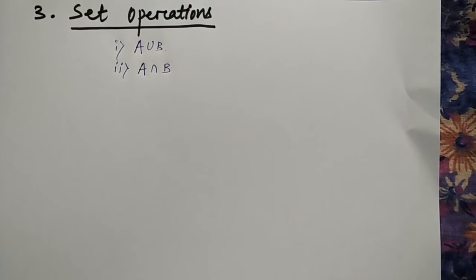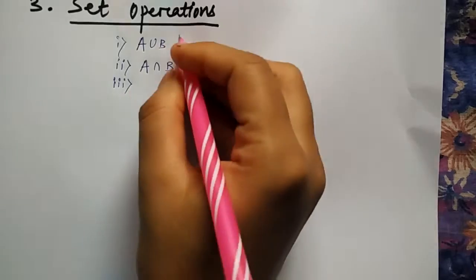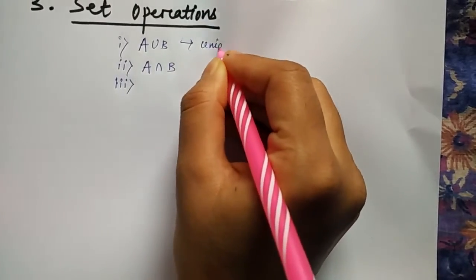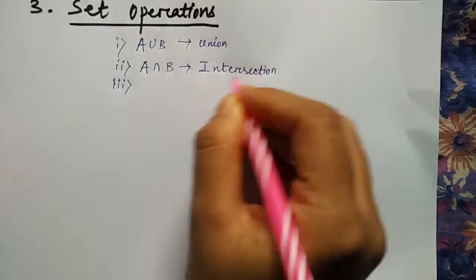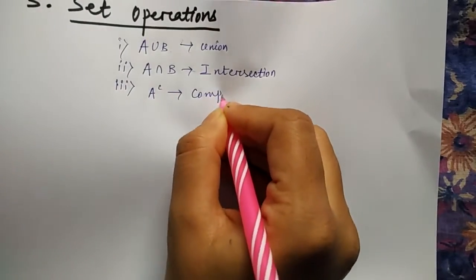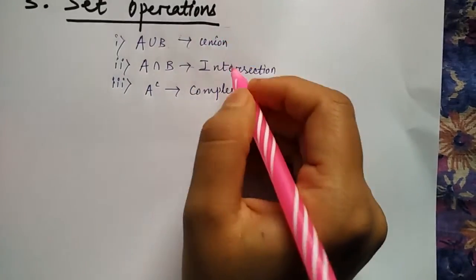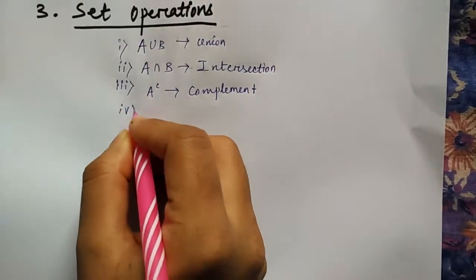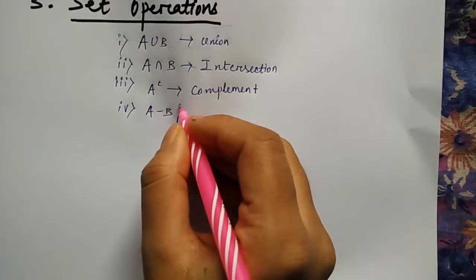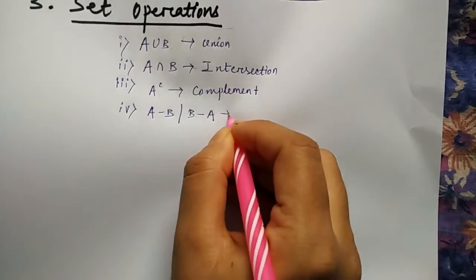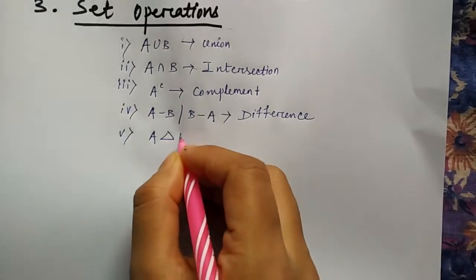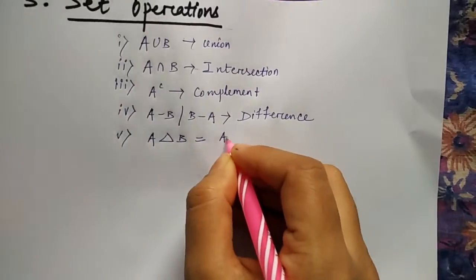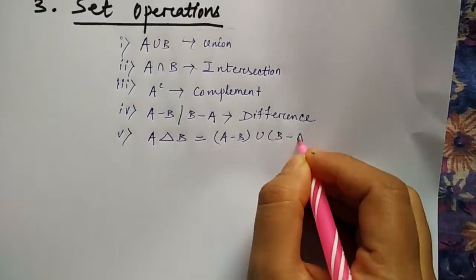In this video we'll see about set operations. First, let me note down the operations in a set. The first is union, next is intersection, the next is complement. Writing the notation then the name — this or this is called as difference.